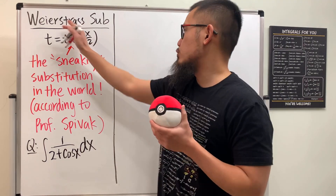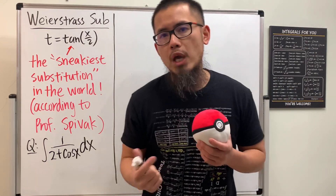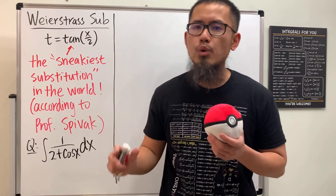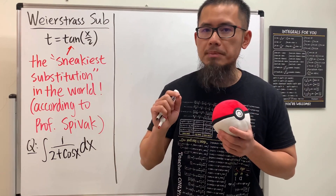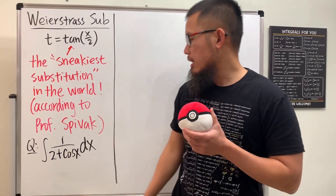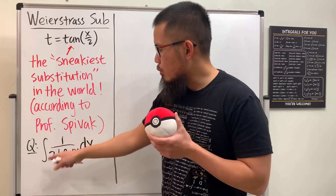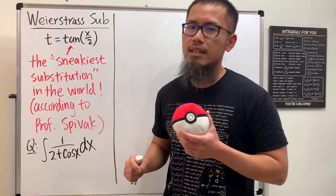You should definitely know the Weierstrass substitution because this will help you to solve integrals of rational functions in terms of sine and cosine. A classic example is the integral of 1 over 2 plus cosine x.